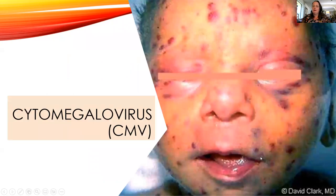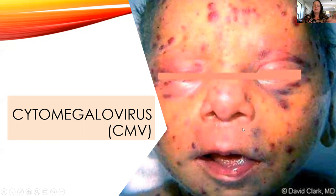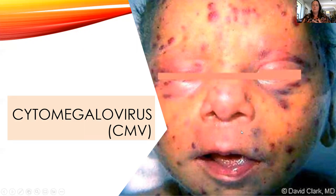Cytomegalovirus causes what we call the blueberry muffin rash, seen in babies infected while in the womb. These babies often have intrauterine growth restriction (IUGR), learning difficulties, and other growth restrictions. The number one way to avoid viral infections is hand washing — that's what we'd suggest to a pregnant woman.